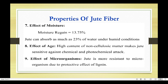Effect of moisture: moisture regain is 13.75% and jute can absorb approximately 4.7% of water under normal conditions. Effect of chemicals: high content of non-cellulose matter makes jute sensitive against chemical and photochemical attacks. Effect of microorganisms: jute is more resistant to microorganisms due to the protective effect of lignin.